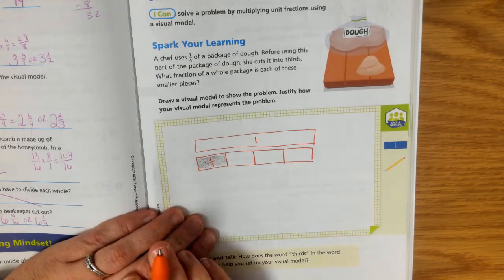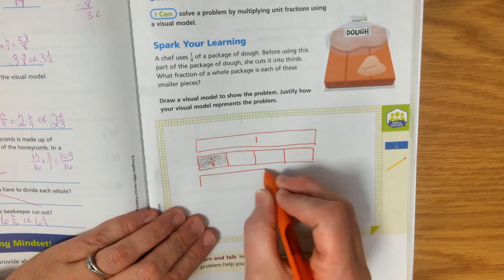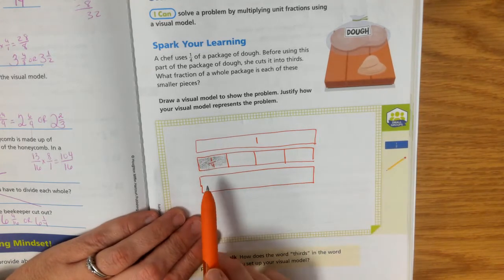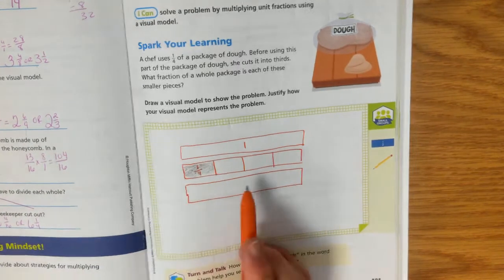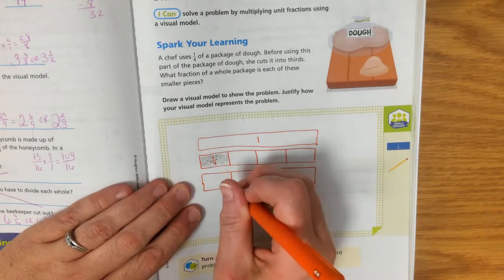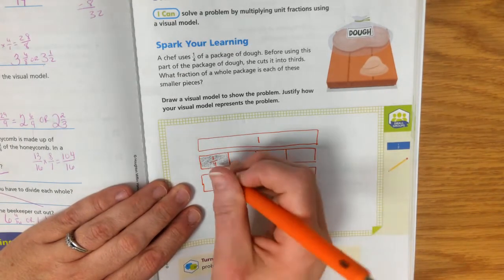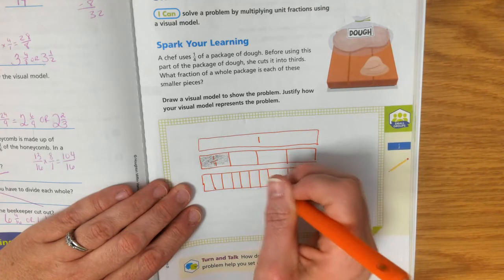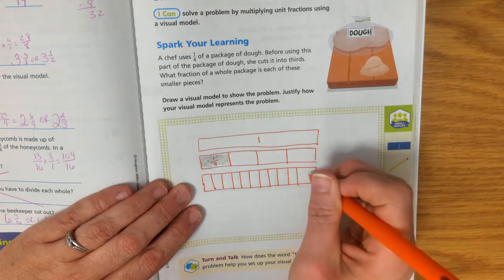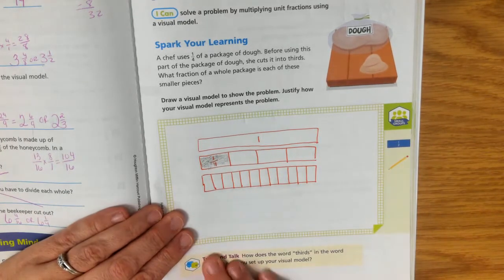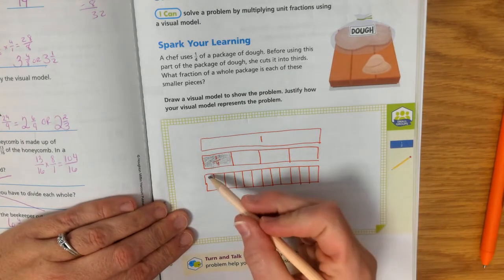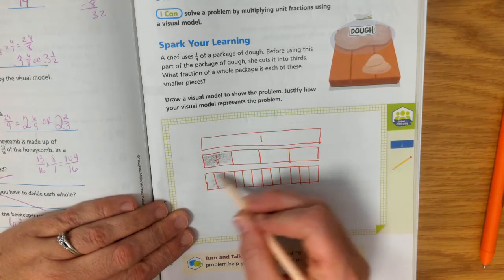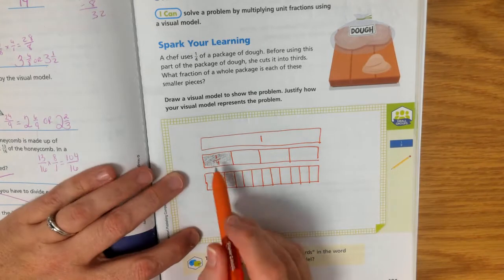Now, the chef takes this fourth and cuts it into thirds. So again, here's our whole dough. And we're trying to figure out how much, if she cuts this, so here's our fourths of our whole. But she's going to cut this into thirds. So that means if I were to cut each one of these fourths into thirds, that way I could figure out how much each little piece is worth. Here's the part that was used that she cut into thirds, thirds of the fourths.